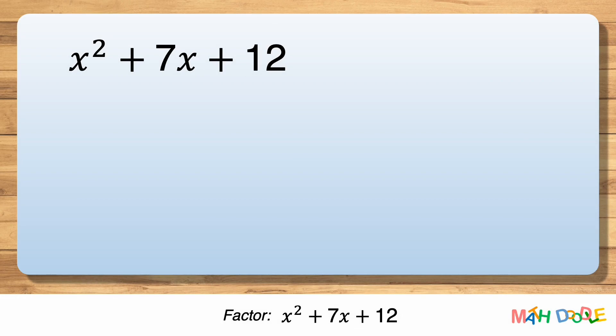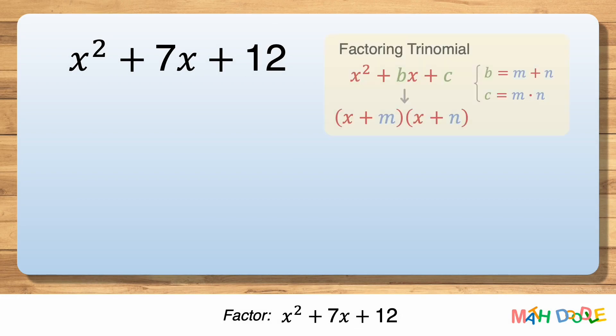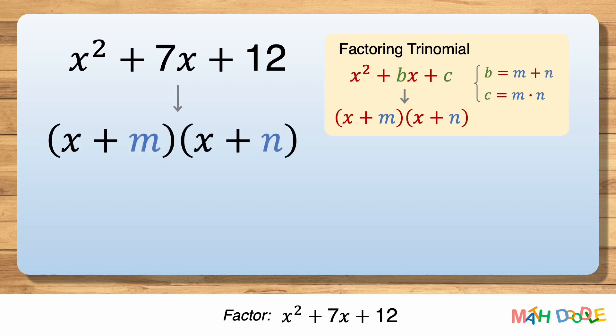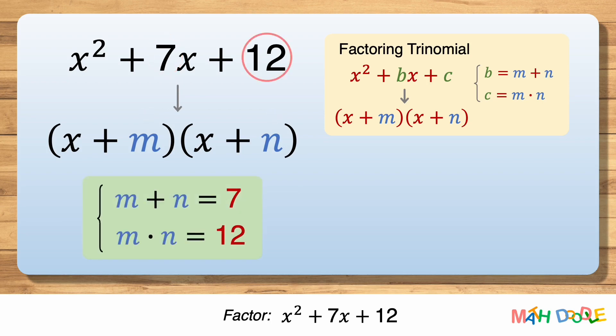To factor this trinomial, let's use this property as a guide. To transform this trinomial into the form of (x + m)(x + n), we must find the values of m and n, where m plus n equals 7 and m times n equals 12. Our goal is to find two numbers that add to 7 and multiply to 12.